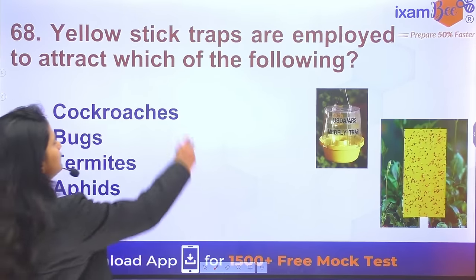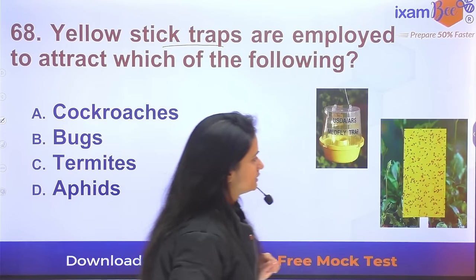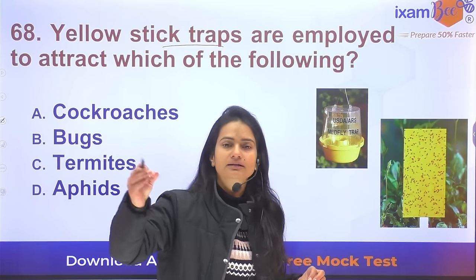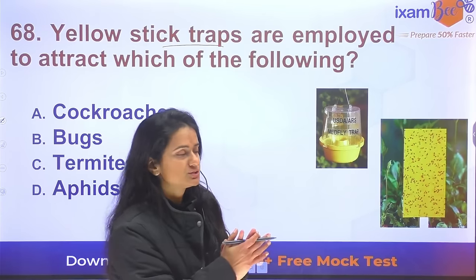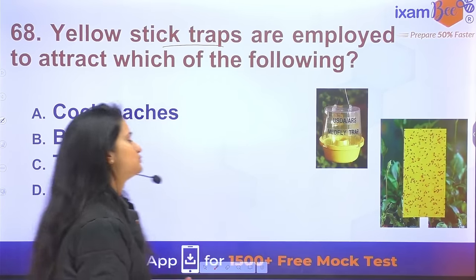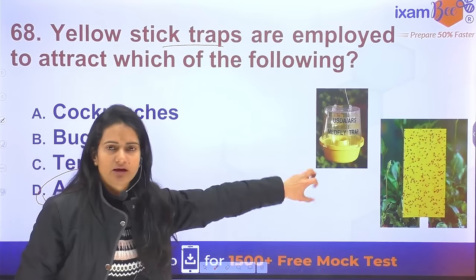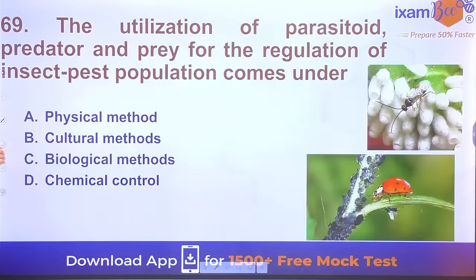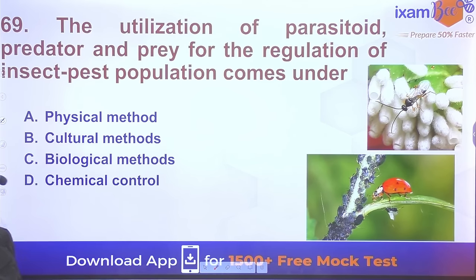Question 68: Yellow sticky traps are used so that the male insect is attracted to the trap and gets stuck. This reduces mating opportunities, thereby preventing the next generation of pests. Yellow sticky traps are used for monitoring and controlling flying insect pests.